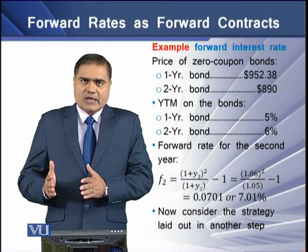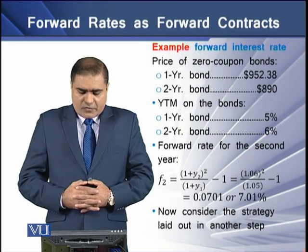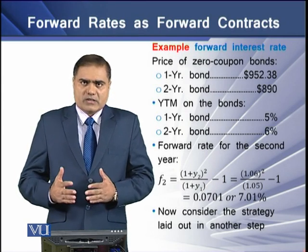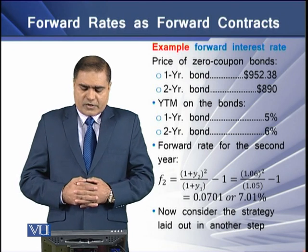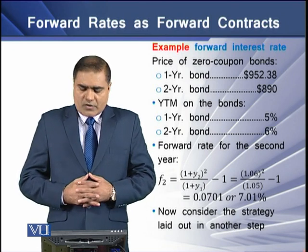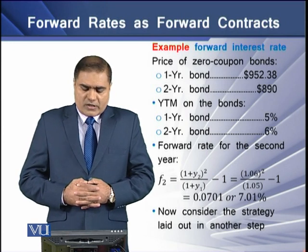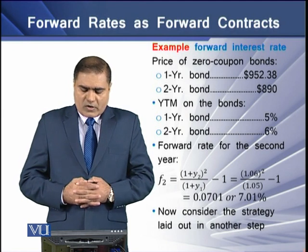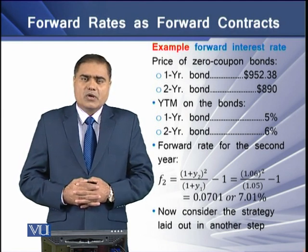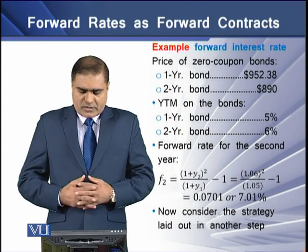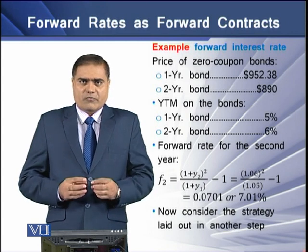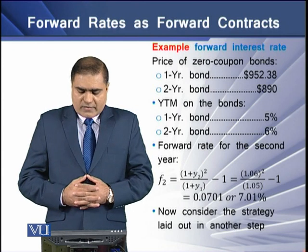To understand this mechanics, consider an example with zero coupon bonds. For year one, the bond value is $952.38, and at the end of year two, the bond has a price of $890. The YTM on the year-one bond is five percent and on the year-two bond is six percent. Using the forward rate formula, the forward rate for the second year comes to 7.01 percent.